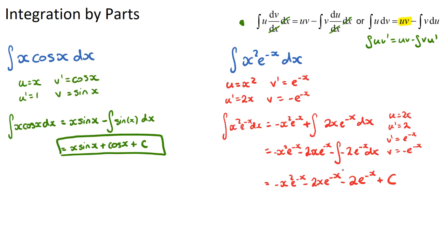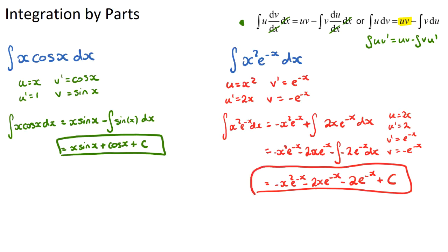That was quite a long one, requiring integration by parts twice, which is common in more challenging IB Maths questions. We just need to make sure we track all the correct signs carefully — here there were three negatives to manage. I encourage you to practice a bunch of integration by parts questions. The key is to identify your u and v' correctly, and ideally choose u so that it differentiates down to a constant, otherwise you'll keep getting repeated integration by parts. Good luck.